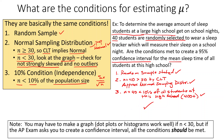Dot plots are good graphs, histograms are decent, stem-and-leaf plots are okay, and box-and-whisker plots are usually good because they show outliers. However, box plots don't help much with skew, so I like dot plots because they can show you the skew.